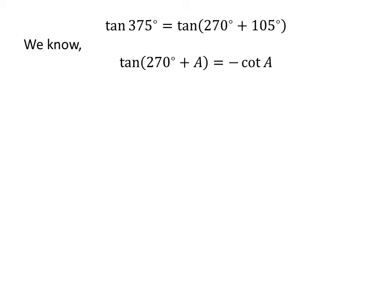We know the trigonometry identity: tangent of 270 degrees plus A is equal to minus cotangent of A. The proof of this identity is explained in the video appearing in the upper right corner, and the link is also given in the description section. So tangent of 375 degrees is equal to minus cotangent of 105 degrees.